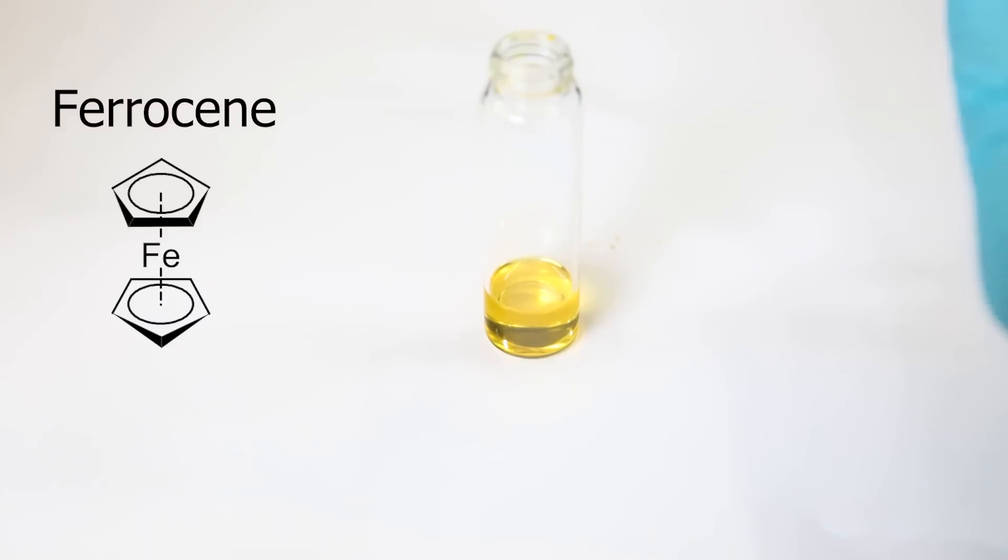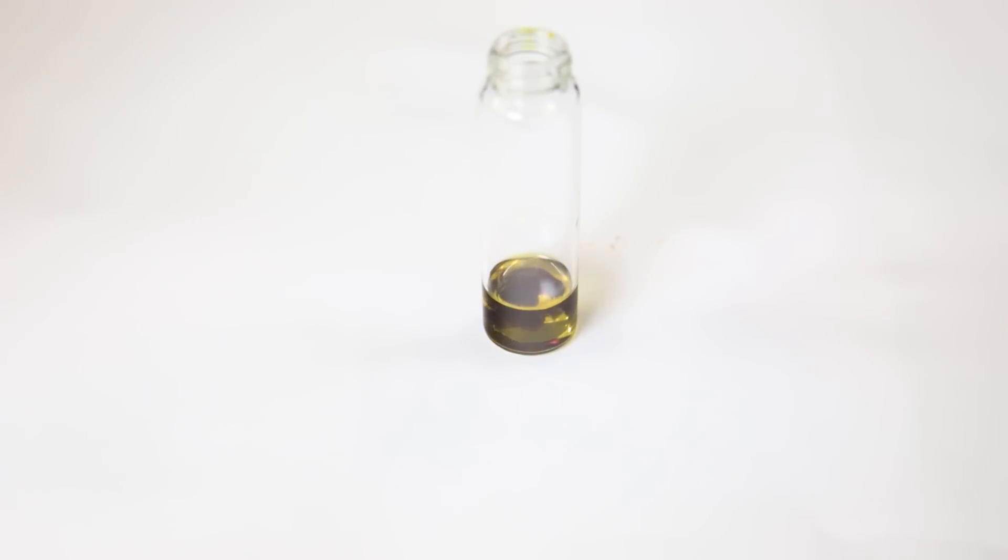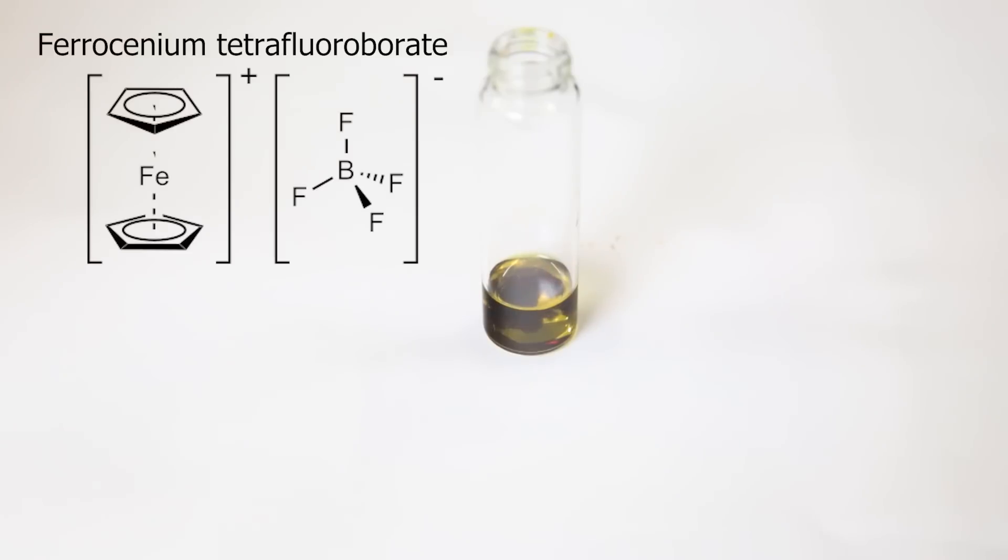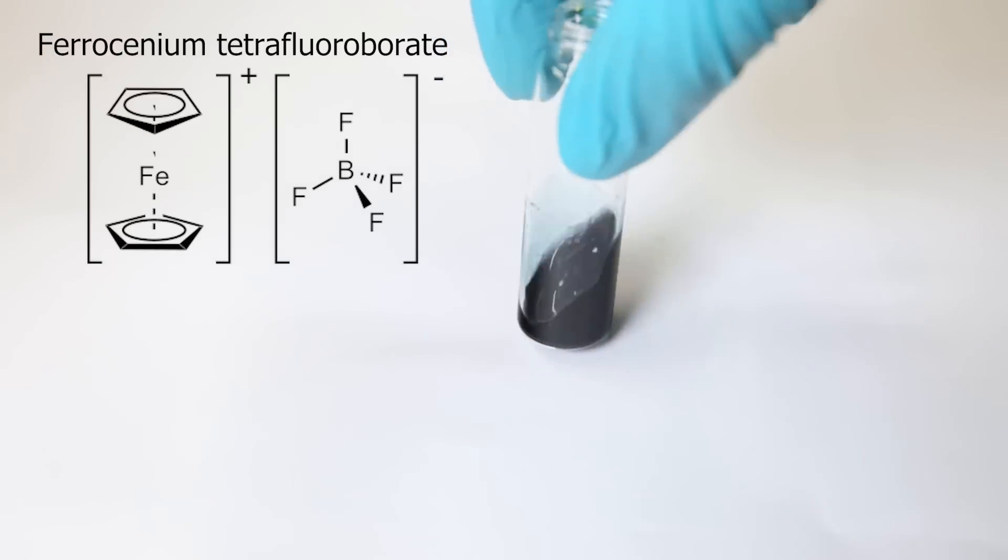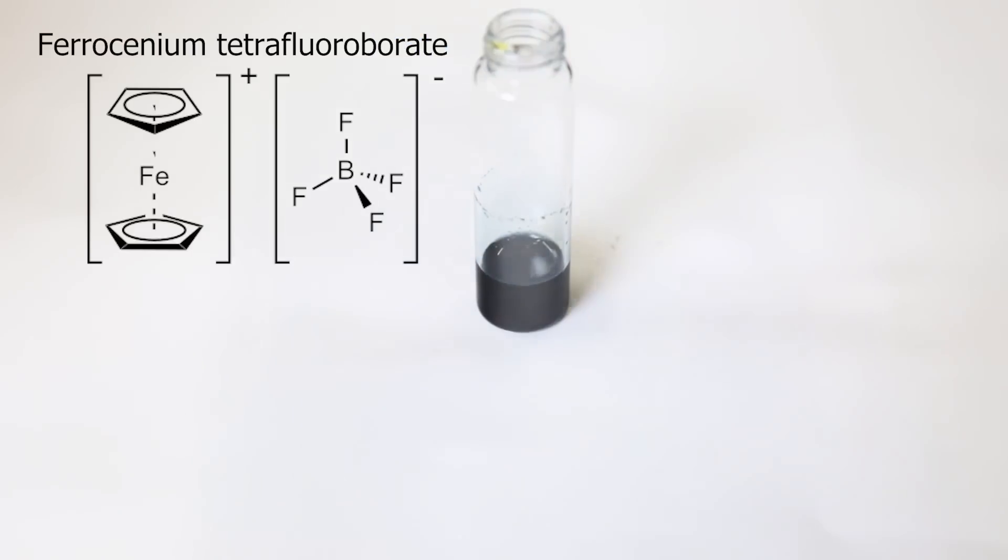When adding the ferrocene, it is immediately oxidized to the ferrocenium cation and then complexes with the tetrafluoroborate ion to form the blue complex ferrocenium tetrafluoroborate. This compound is used as a one-electron oxidizing agent because the produced ferrocene in the reaction is pretty much inert and is easily separated.